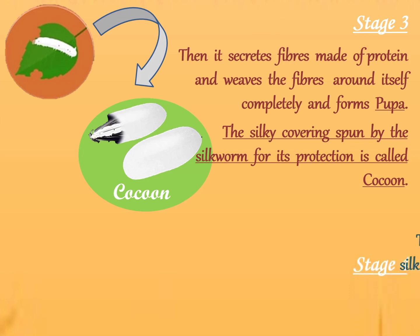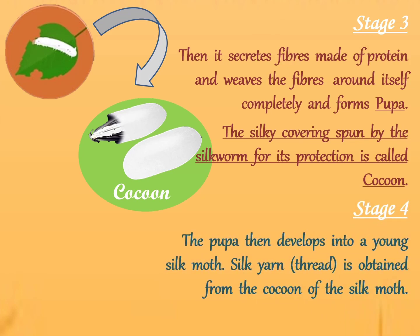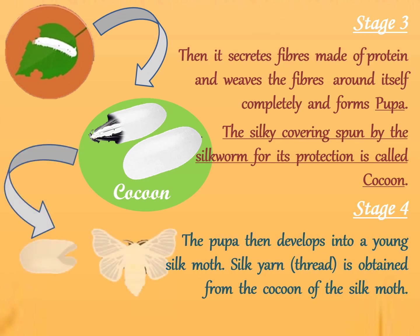Stage 4: The pupa then develops into a young silk moth. The cocoon splits up and a beautiful silk moth comes out. An adult silk moth lives only for a few days. The silk thread is obtained from the cocoon of the silk moth.